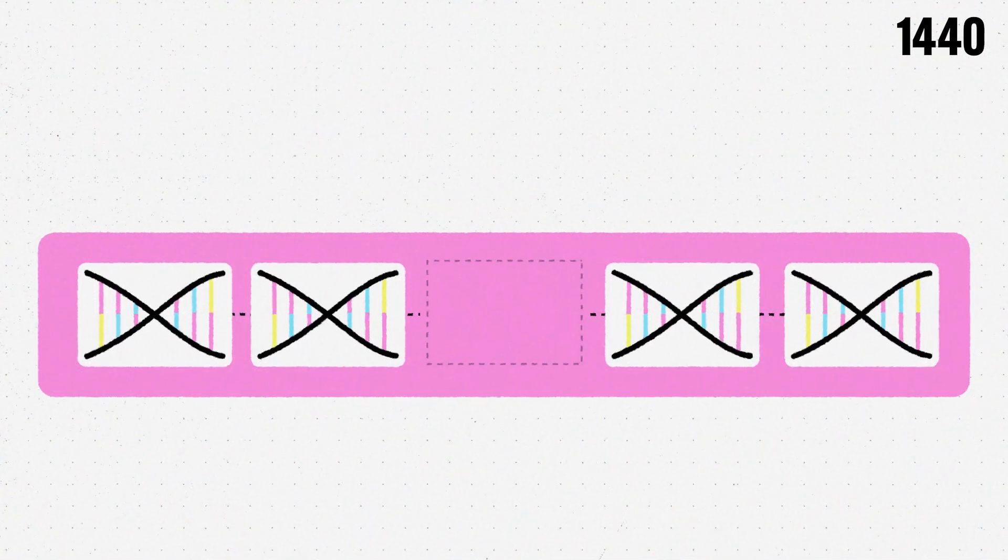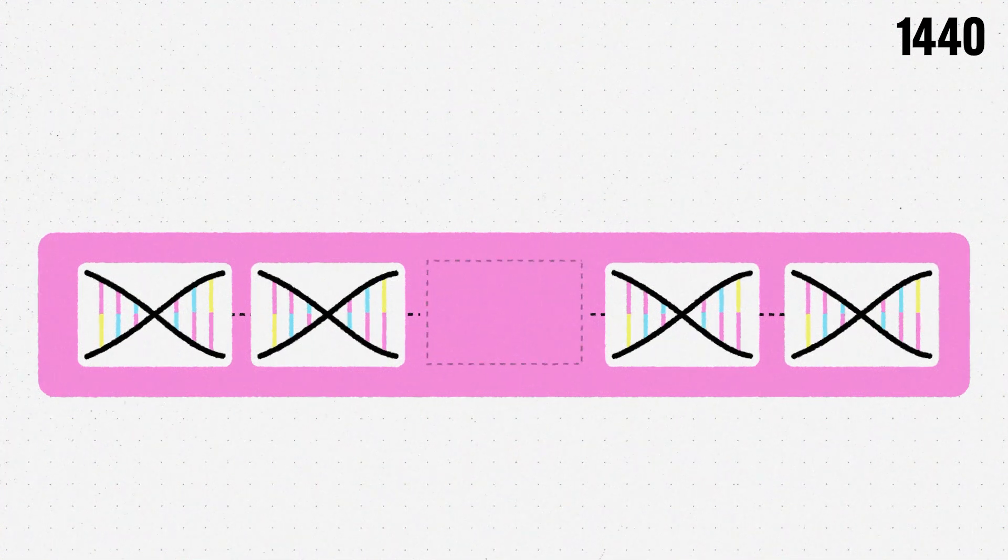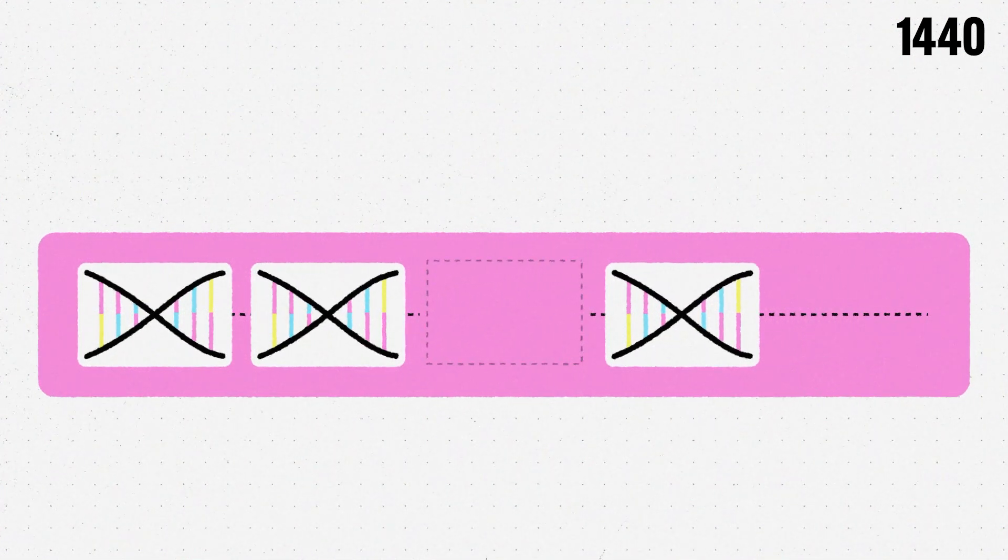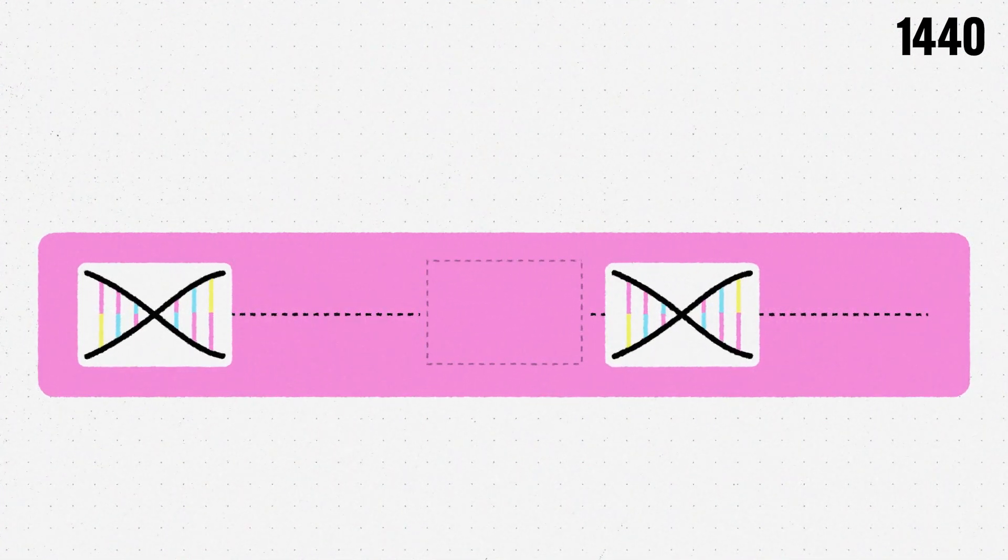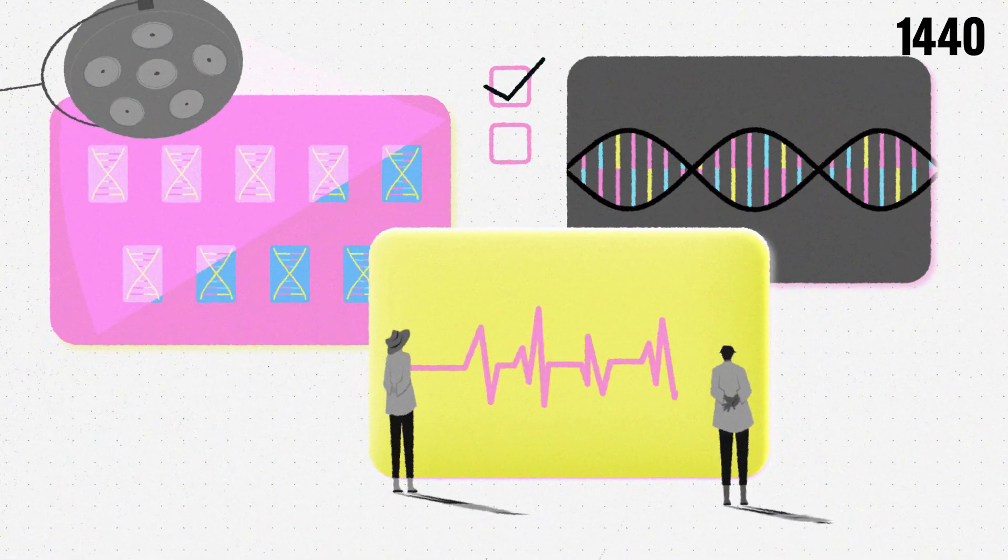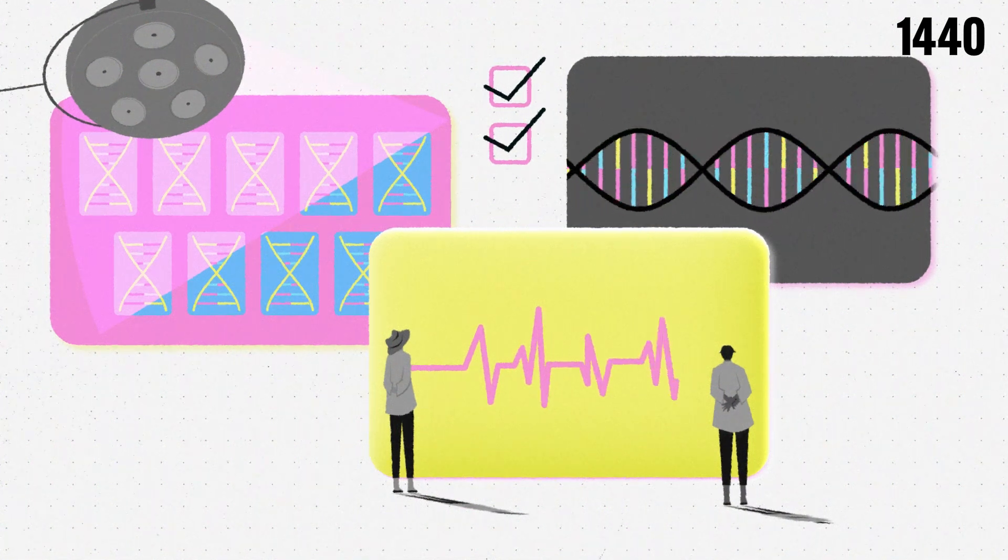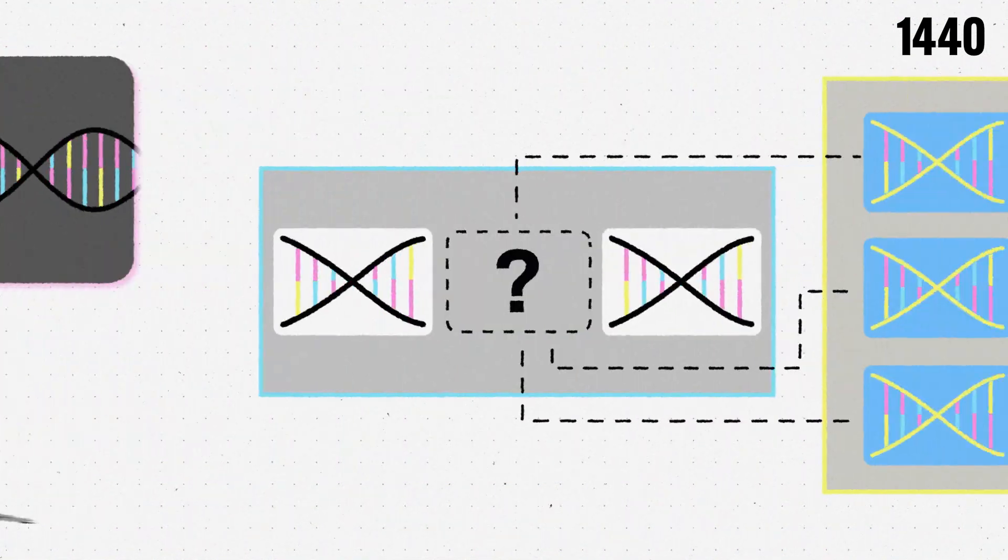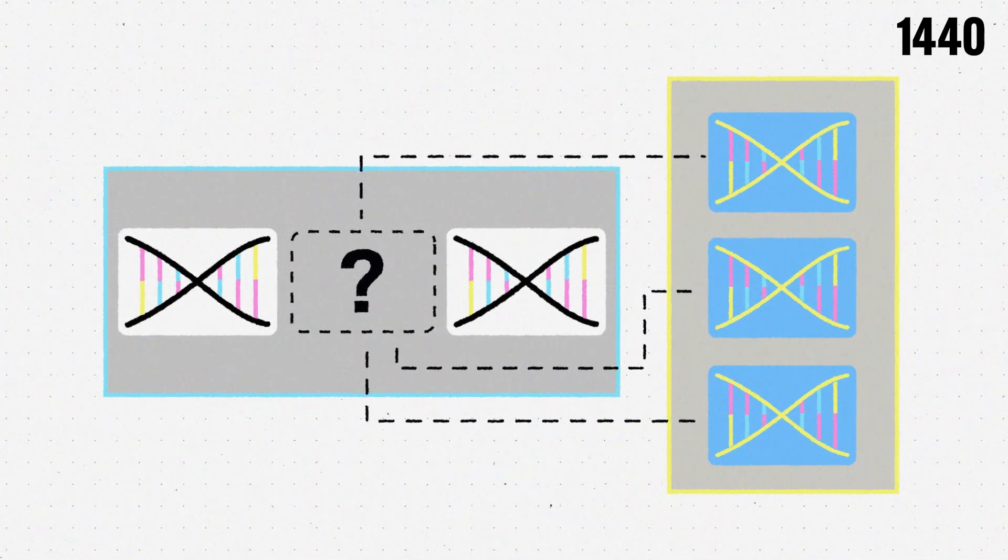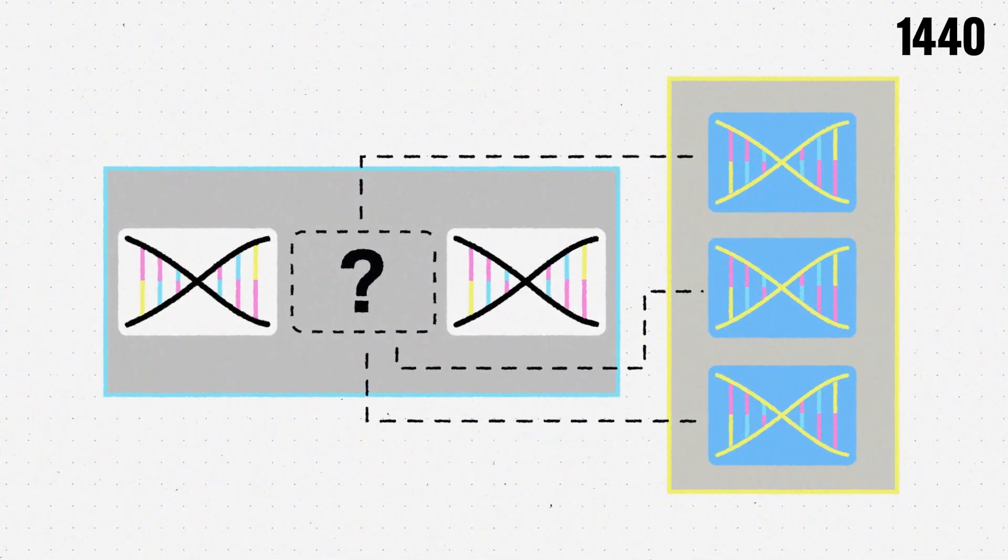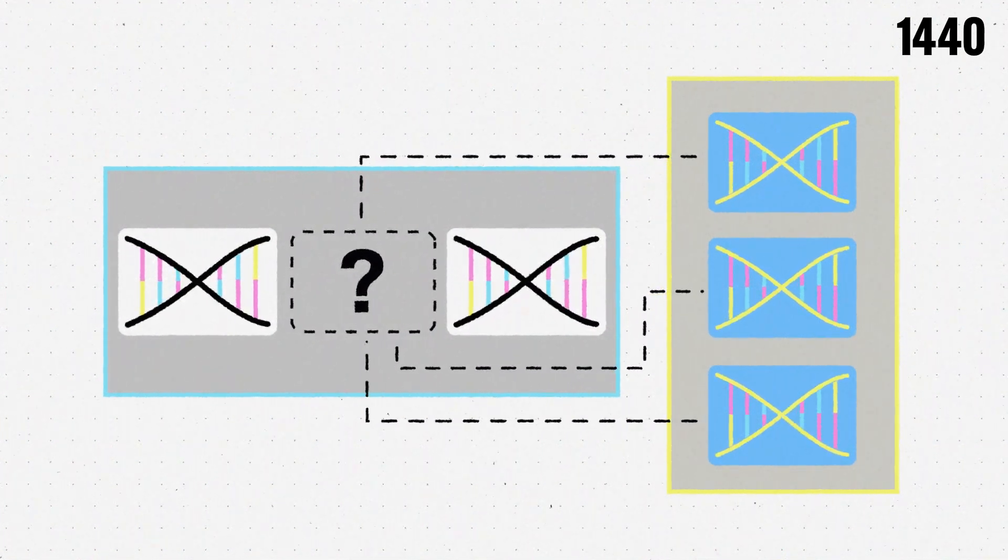If CRISPR only removes the gene, the cell tries to repair the cut, but this can cause errors or even turn off entire genes. So scientists have learned to create customized templates that cells use as blueprints when repairing the targeted area, allowing CRISPR to cut and insert a corrected or new copy of the genetic sequence.